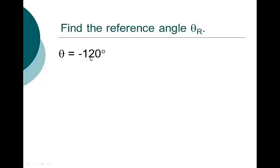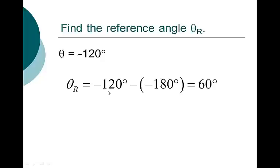Now, negative 120. Don't freak out too much. Negative 120 is in quadrant 3 — you start at 0 and go clockwise because it's a negative angle, and you end up down in quadrant 3. Officially, because it's a quadrant 3 angle, we go negative 120 minus negative 180, which takes 120 away from 180, giving us 60. Most students would just take 180 minus 120 and get 60 because it doesn't make any difference.